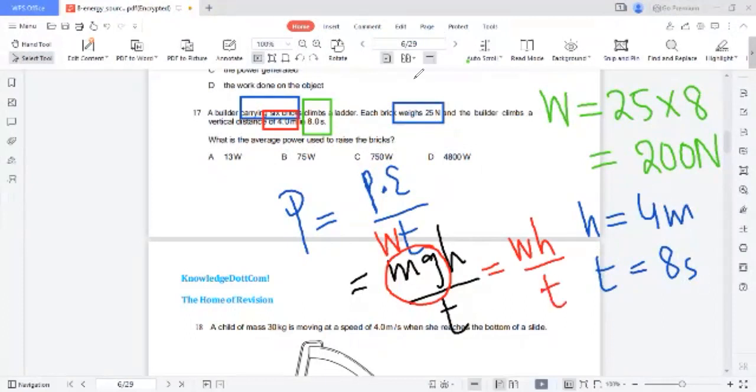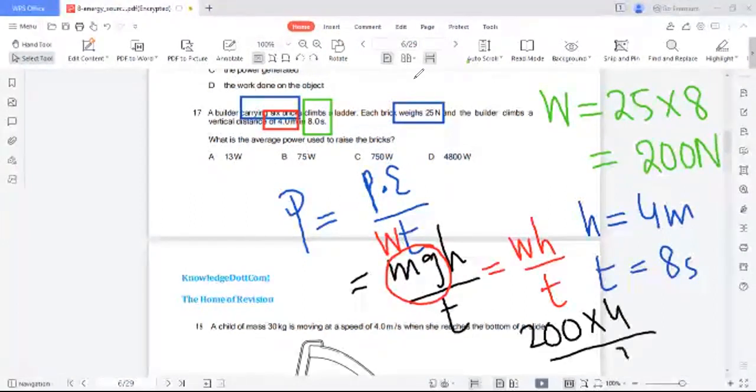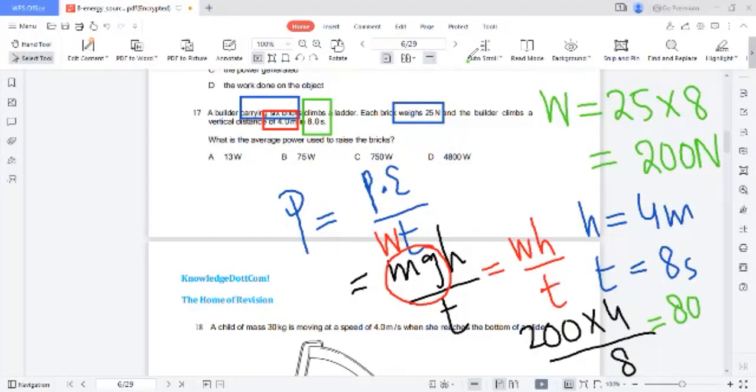We have weight into height over time. Weight is 200, height is 4, and time is 8. So 200 times 8 is 800 divided by 8 is 100. Wait, one second.